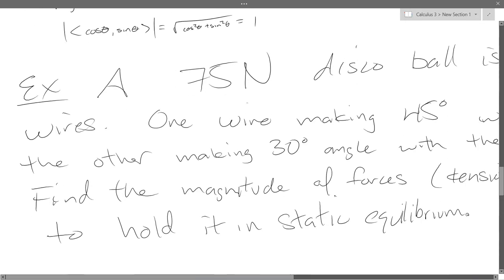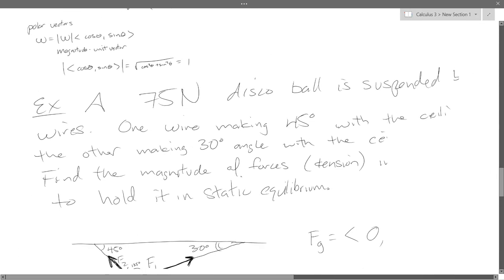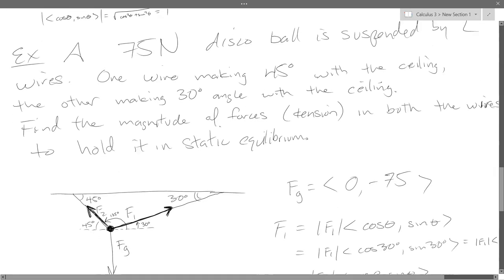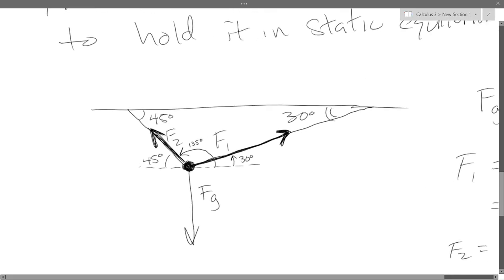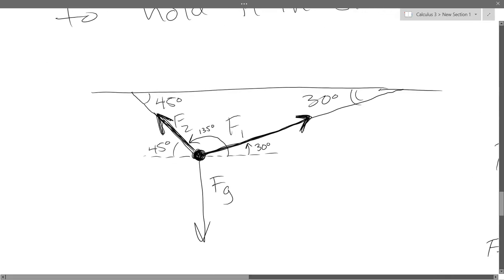And the last part, speed is the magnitude of the velocity vector. So it's not just the velocity vector, but the magnitude of that. Second problem, we had a disco ball suspended by wires. One wire making 45, another making 30 degrees of the ceiling. In static equilibrium, we want to add up the three forces and have them equal zero, the zero vector.